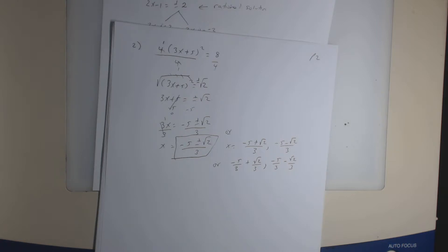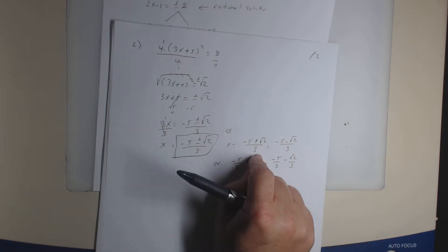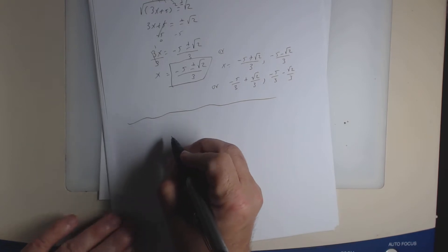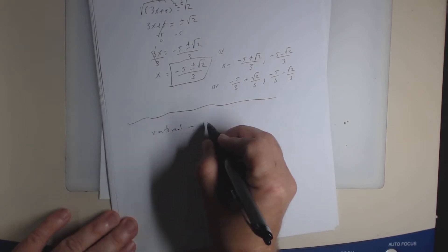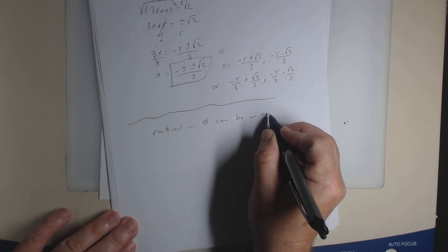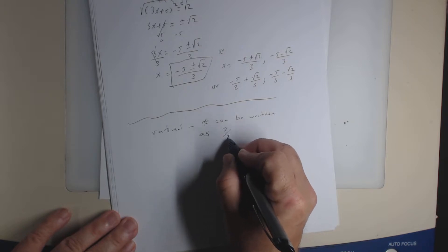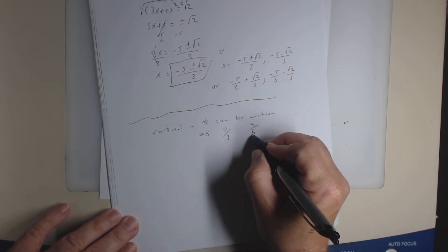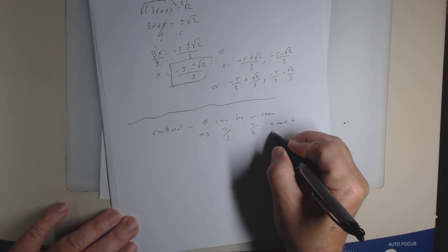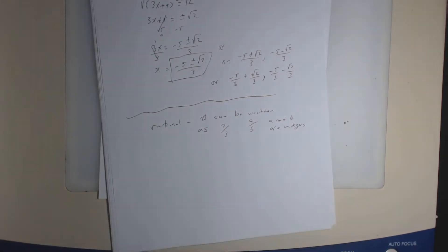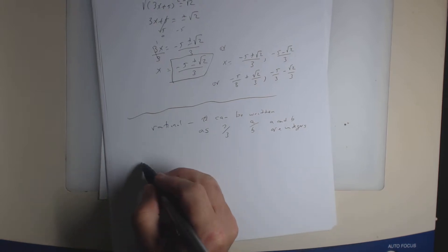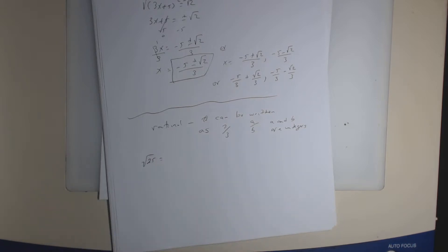A student asks about irrational numbers. Do you know what a rational number is? A rational number is a number that can be written as a fraction — like 7 over 3 — as a over b, where a and b are integers. So any number that can be written as a fraction a over b where a and b are integers is a rational number. For example, the square root of 25 — is that rational or irrational? That's rational because I can write the square root of 25 as 5 divided by 1.